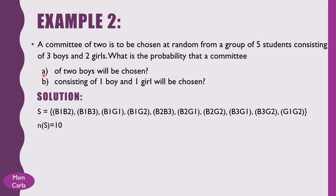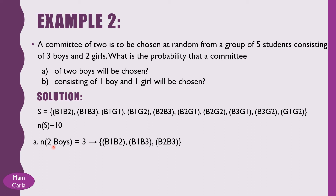Now we are ready to find the probability that 2 boys will be chosen. The pairs of 2 boys are: (B1,B2), (B1,B3), and (B2,B3). The cardinality of selecting 2 boys is 3. The probability of selecting 2 boys is 3 divided by 10, which equals 3/10.